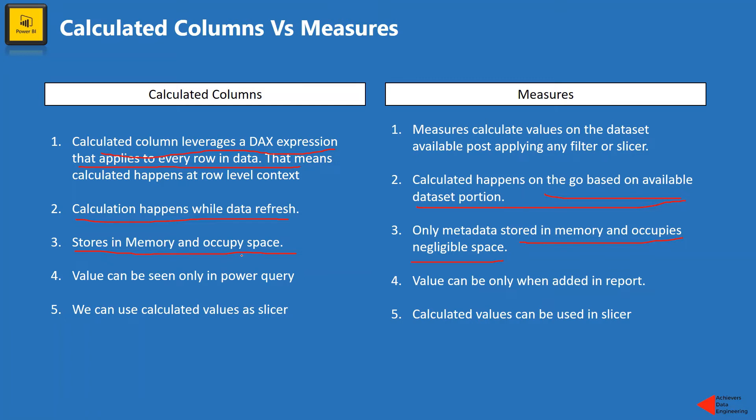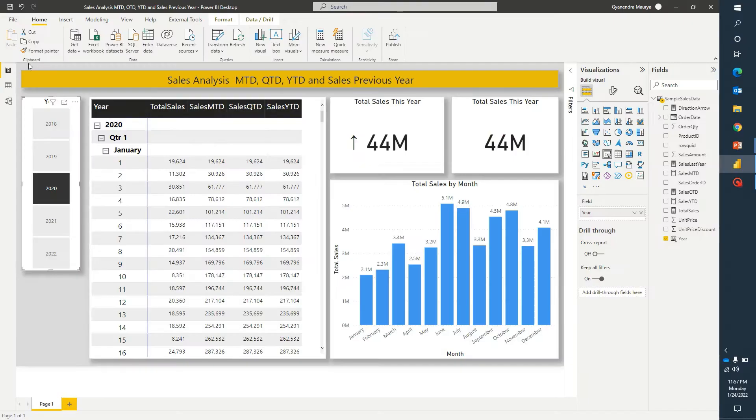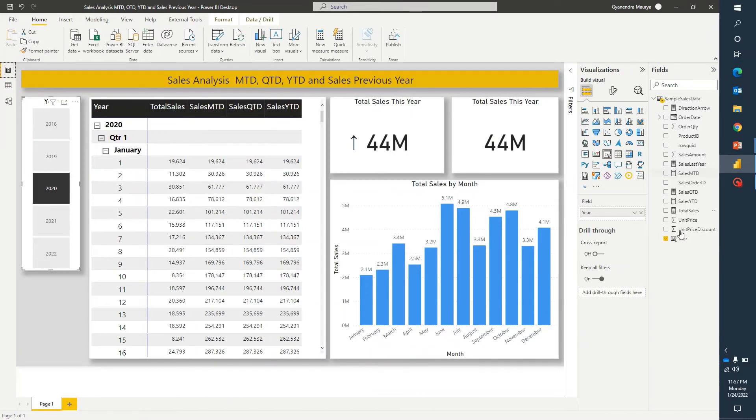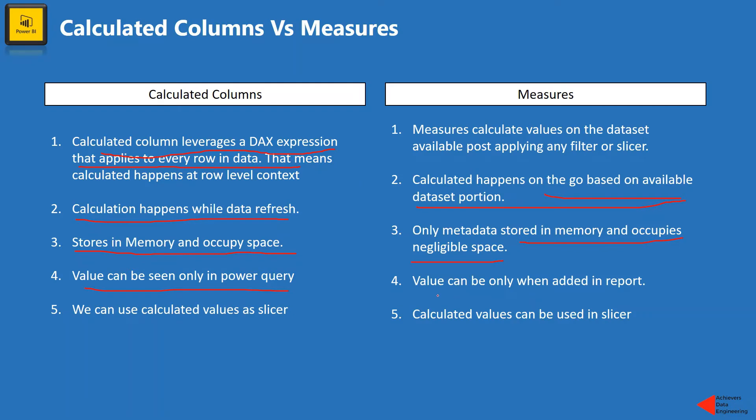Now, in case of calculated column, if we want to see the actual values, then we will have to go into the power query editor mode, or maybe in the data pane or data tab, then only we can see the value like this. However, in case of measure, we will have to drag that measure on the canvas in order to see its value.